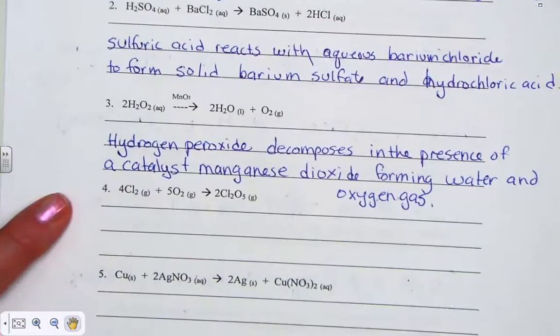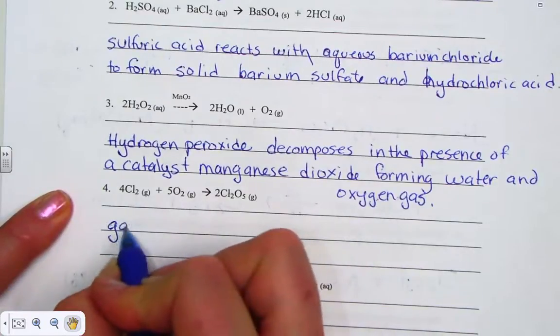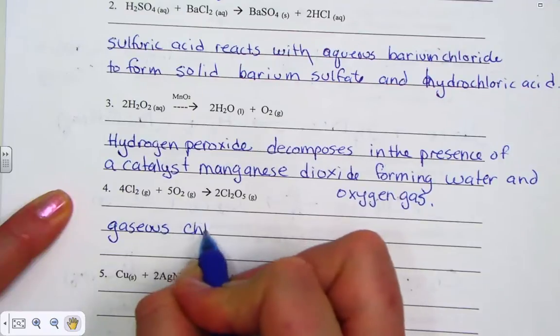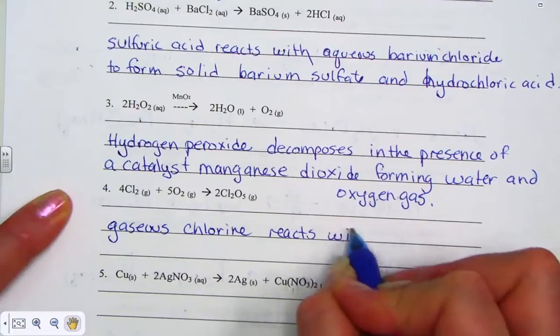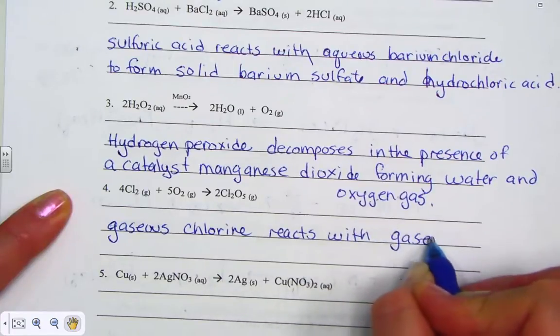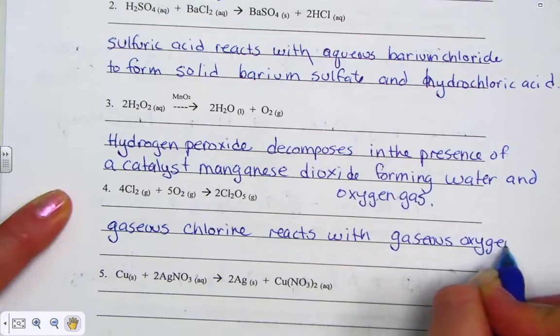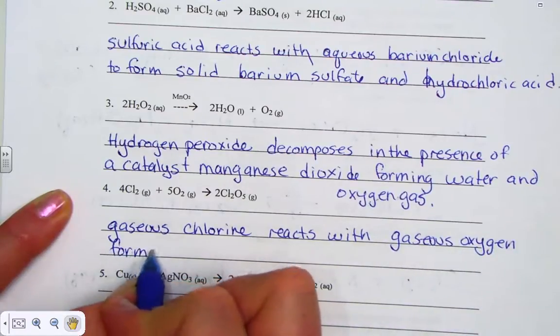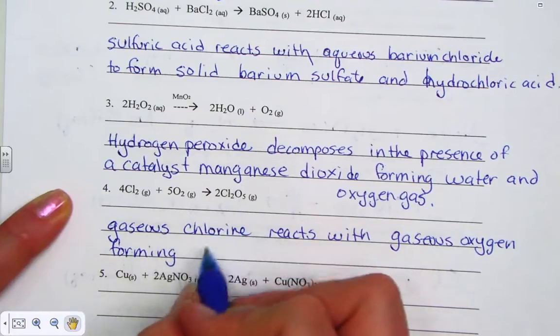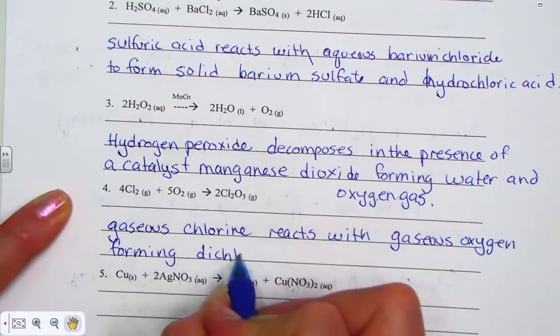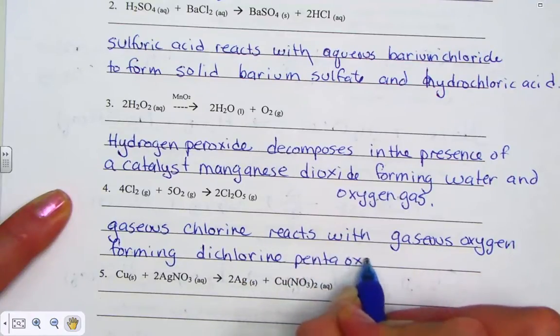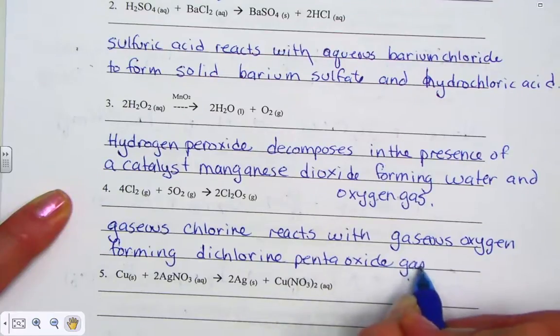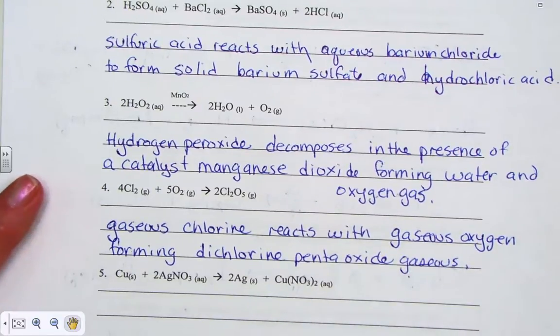Number four, a little combination reaction here. We have gaseous chlorine. Reacts with would be our verb. Gaseous oxygen. Forming, or to form. Now this is a molecular compound, so we're going to hear prefixes. Dichlorine pentoxide. Gaseous, I should have put that first, but that's all right. I got it in there. Gaseous, dichlorine pentoxide, just so it's there.